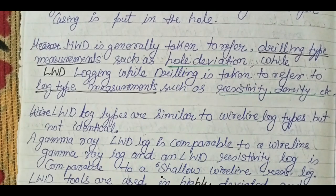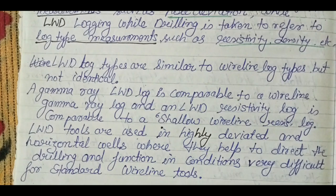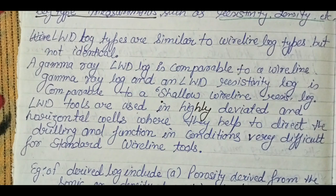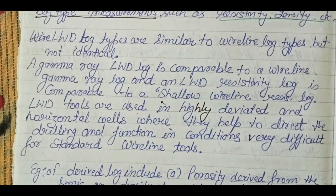Logging While Drilling log types are similar to wire line logs but not identical. For example, a gamma ray LWD log is comparable to a wire line gamma ray log, and an LWD resistivity log is comparable to a shallow resistivity log. LWD logs are particularly used in highly deviated and horizontal wells where conventional wire line tools cannot easily enter, helping to direct drilling where standard wire line tools would struggle.